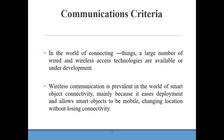A large number of wired and wireless access technologies are available for connecting IoT devices and sensors. Wireless communication is prevalent in the world of smart object connectivity because they are easy to deploy and allow smart objects to be mobile — that is, they can change location without losing connectivity.